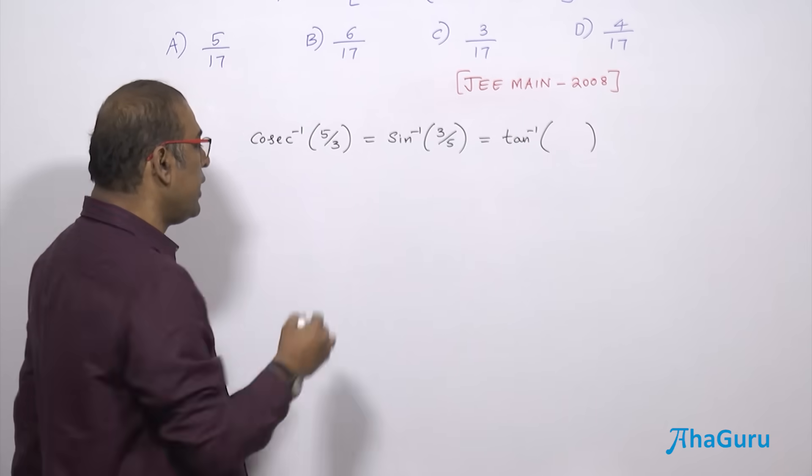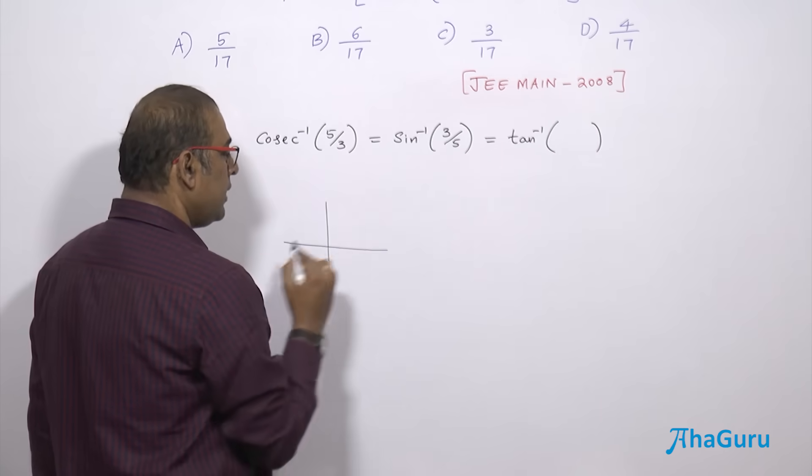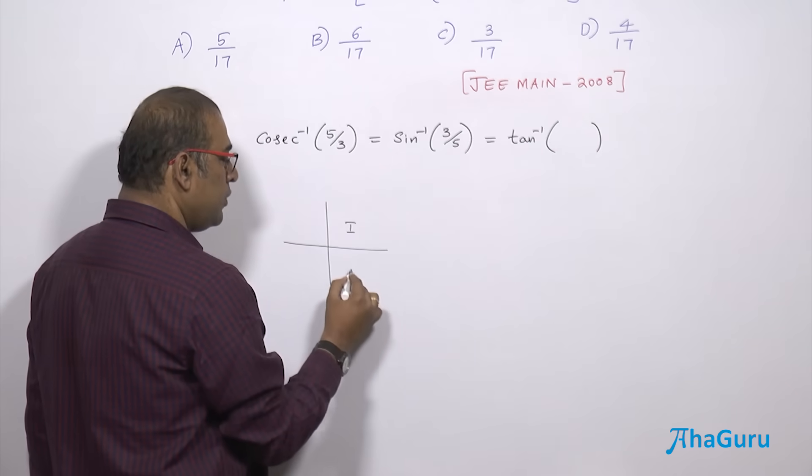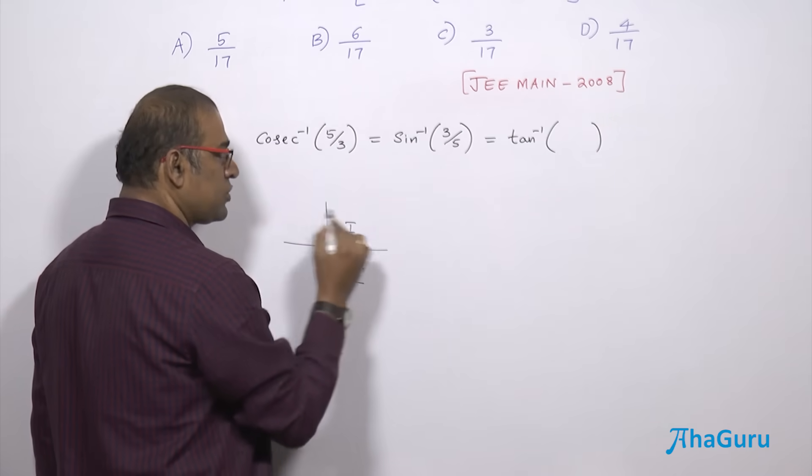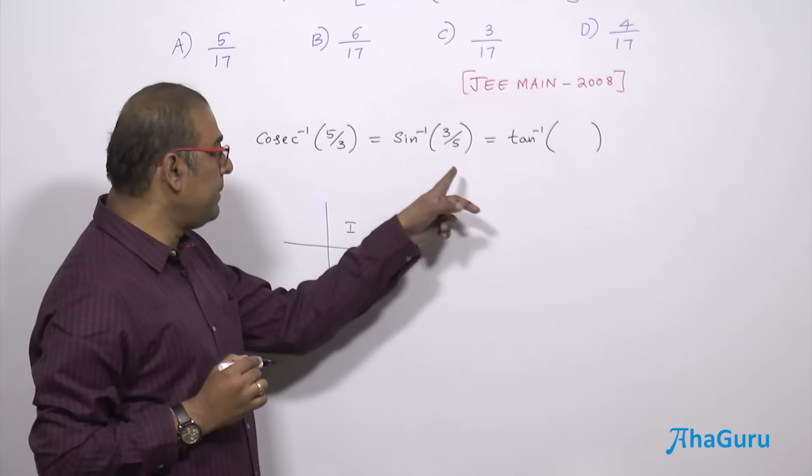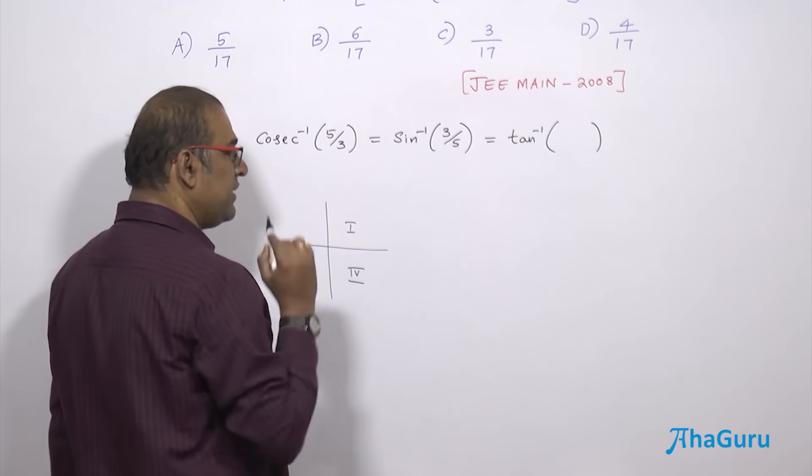The sine inverse is going to give you either the fourth quadrant result or first quadrant. So that's going to be a positive result. The angle is going to be the first quadrant.